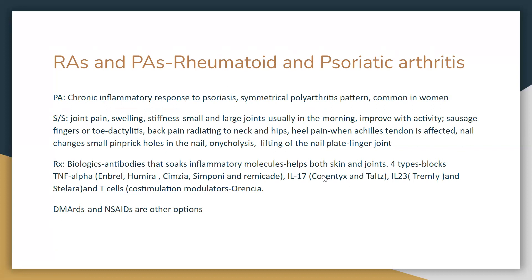Psoriatic arthritis patients have a history of psoriasis with a symmetrical polyarthritis pattern, more common in women. Signs and symptoms include joint pain, swelling, and stiffness. The keyword is sausage fingers or toe dactylitis. Patients may also have back pain radiating to the neck and hips, heel pain especially in the Achilles tendon area, and nail changes such as pitting and onycholysis at the nail plate to finger joint area. Treatment includes biologics — antibodies that block inflammatory molecules, helping both skin and joints — as well as DMARDs and NSAIDs.